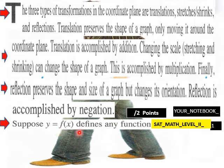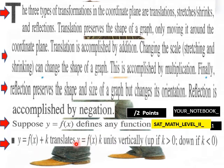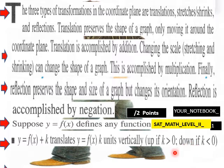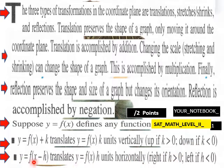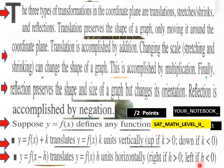Suppose y = f(x) defines any function. Then y = f(x) + k translates y = f(x) k units vertically: up if k > 0, down if k < 0. And y = f(x − h) translates y = f(x) h units horizontally: right if h > 0, and left if h < 0.